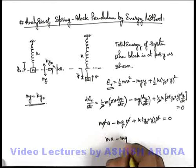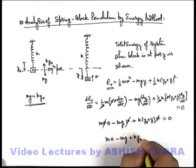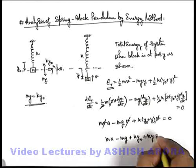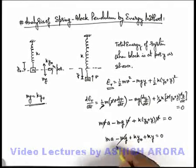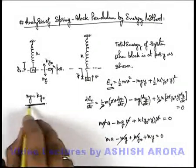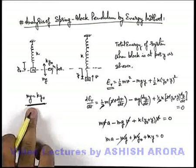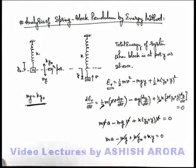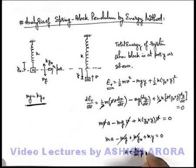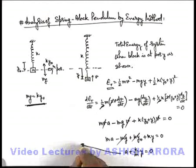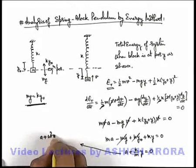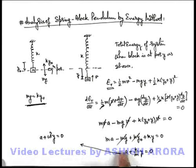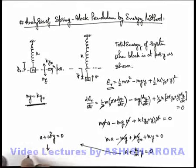And it can be written as ma - mg + ky₀ + ky = 0. Here mg and ky₀ also gets cancelled out as we have already obtained the equilibrium equation. And on just rearranging this term we can say a + (k/m)y = 0, which can be written as a + ω²y = 0, or a can be written as -ω²y. So on comparing this equation we get ω = √(k/m).